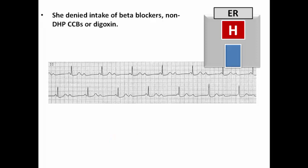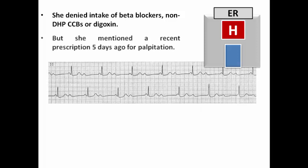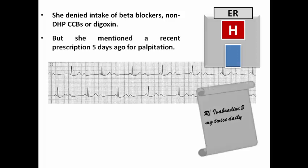The doctors in the ER asked the patient about her drug history, and she denied intake of any beta blockers, calcium channel blockers, or digoxin. But she mentioned a recent prescription five days ago, as her doctor gave her ivabradine for intermittent episodes of palpitation, and she had already started on this medication for five days up to today.